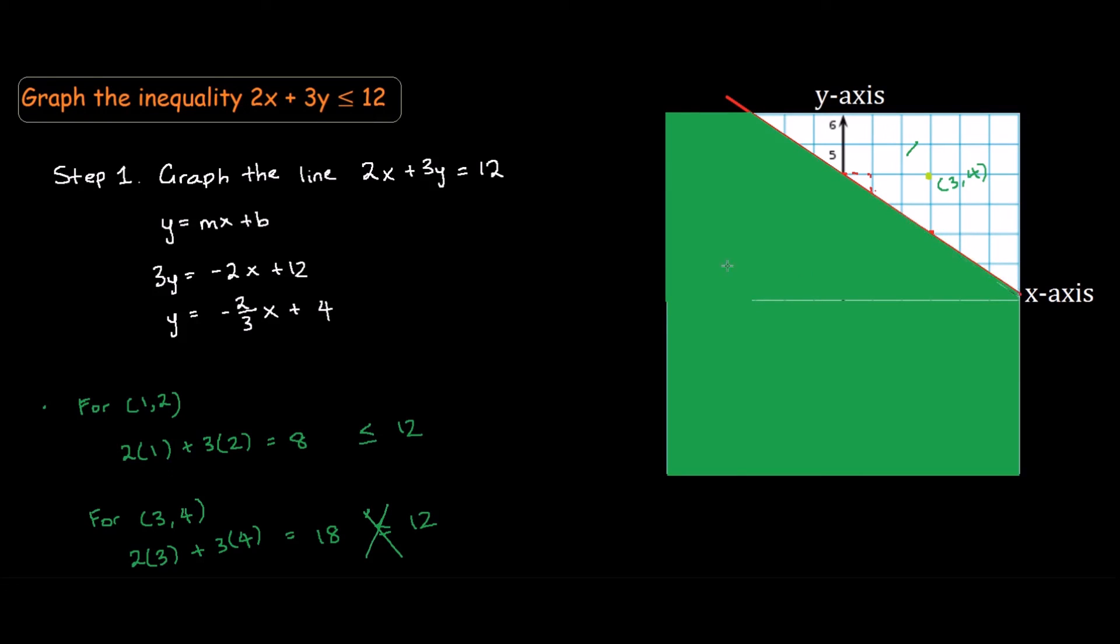But for example, if this was a less than sign, this line would be dotted, so it means it is not part of the solution.